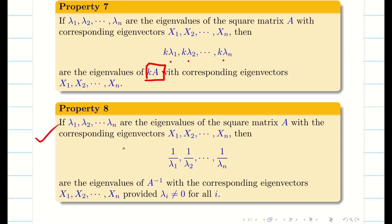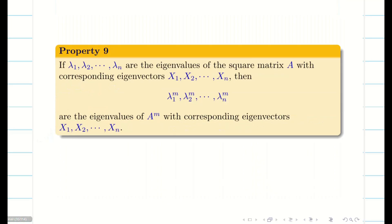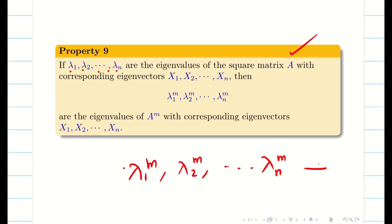Similarly, if lambda 1, lambda 2, ..., lambda N are the eigenvalues of matrix A, and all lambda i are non-zero, then 1 by lambda 1, 1 by lambda 2, ..., 1 by lambda N are the eigenvalues of A inverse. And if lambda 1, lambda 2, ..., lambda N are the eigenvalues of A, then lambda 1 power M, lambda 2 power M, ..., lambda N power M are the eigenvalues of A power M.